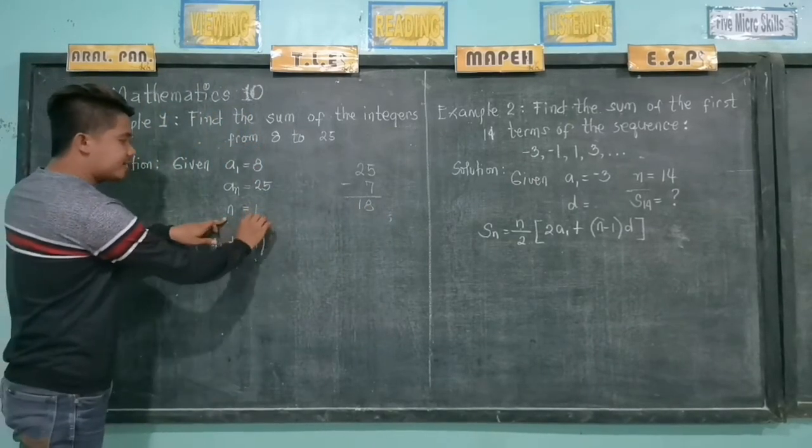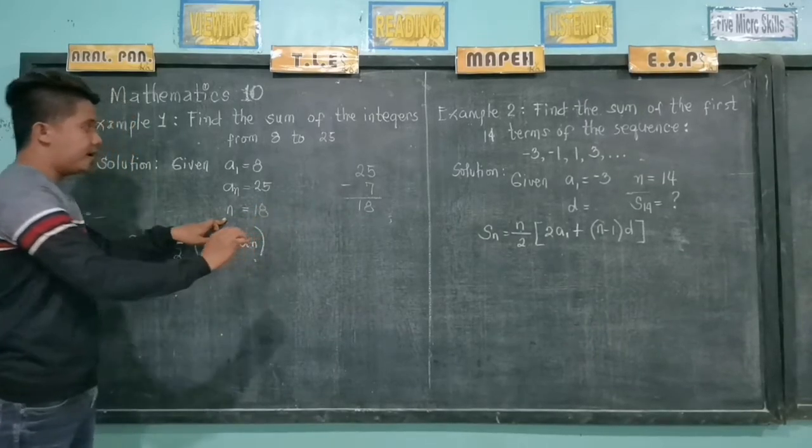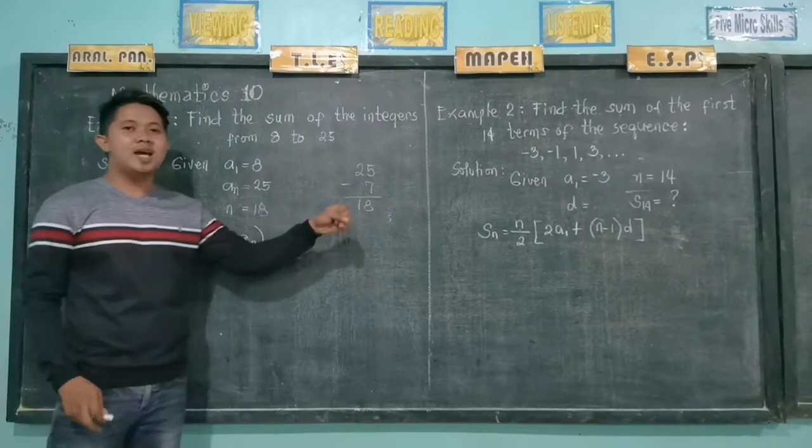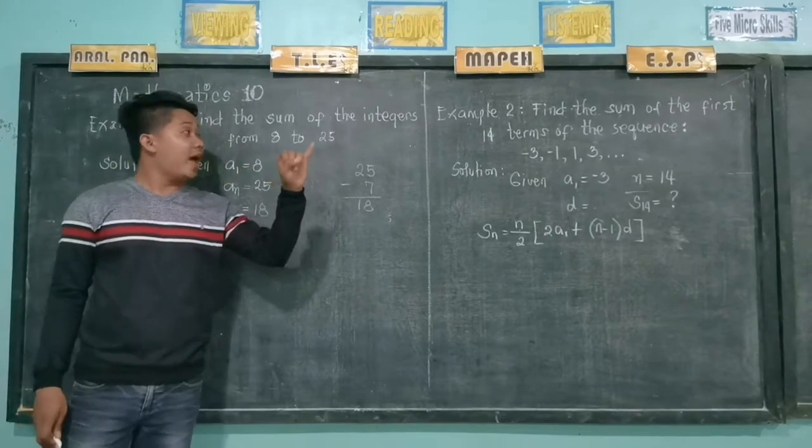So our n is 18. But you can count just to check if our n is really 18. Just count from 8 to 25. Then we have 18.